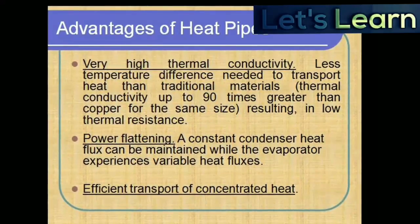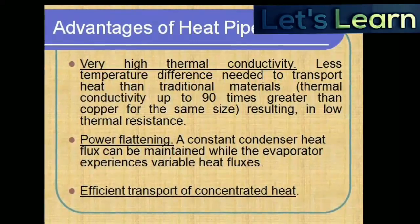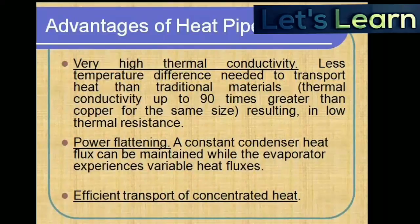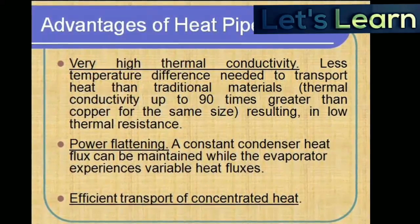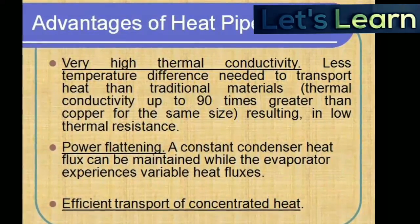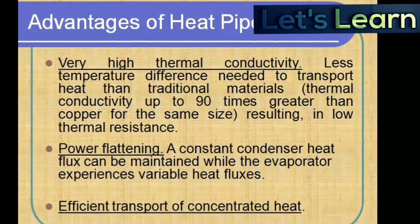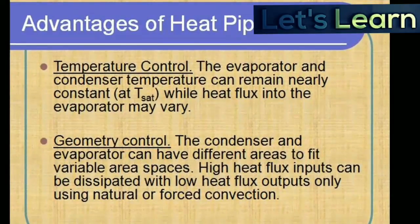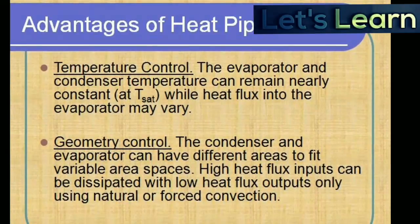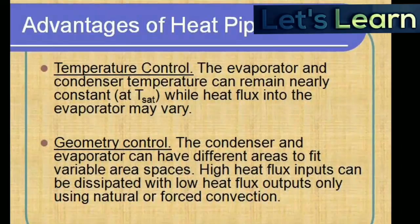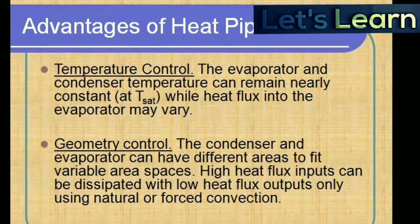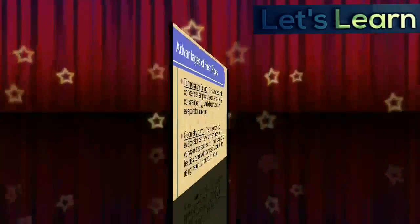Now let's see the advantages of the heat pipe. The first is thermal conductivity — heat pipes have very high thermal conductivity resulting in very low thermal resistance. The second advantage is power flattening — a constant condenser heat flux can be maintained while the evaporator experiences variable heat fluxes. Third is efficient transport of concentrated heat to other sections of the heat pipe. The fourth is temperature control — the evaporator and condenser temperatures remain nearly constant even as heat flux varies. The fifth is geometry control — the condenser and evaporator have different areas to fit variable area spaces, and high heat flux input can be distributed with low heat flux output using natural or forced convection.